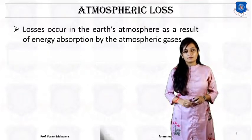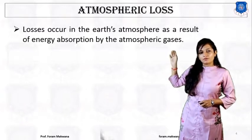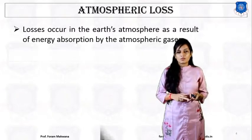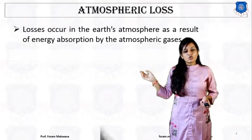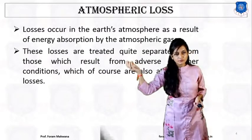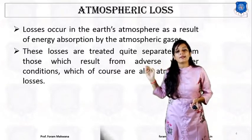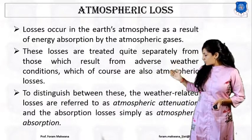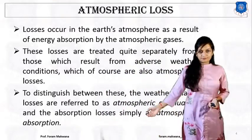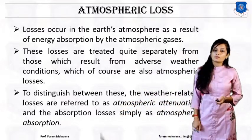How does this loss occur? This loss occurs in the earth's atmosphere as a result of energy absorption by the atmospheric gases. Different gases are present in the atmosphere: oxygen, nitrogen, nitrous oxide, carbon dioxide. Based on the number of gases present, there is going to be attenuation. These losses are treated quite separately from those which result from adverse weather conditions. To distinguish between these cases: weather-related losses are known as atmospheric attenuation, and absorption loss is simply known as atmospheric absorption.